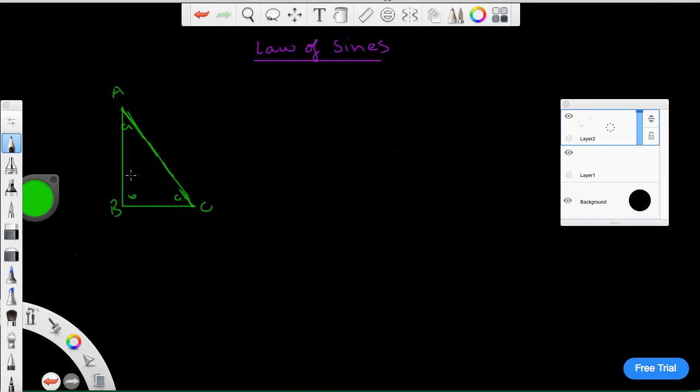Sine of angle A divided by BC, this side, equals sine over A - sorry, sine over...